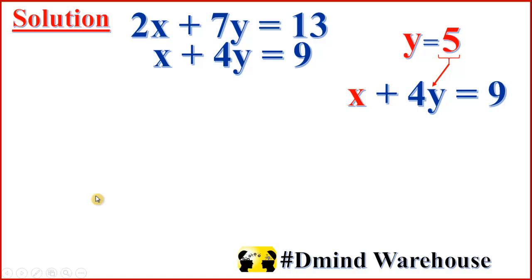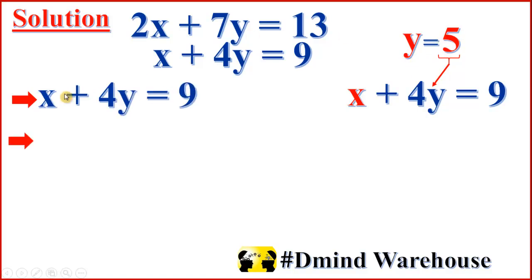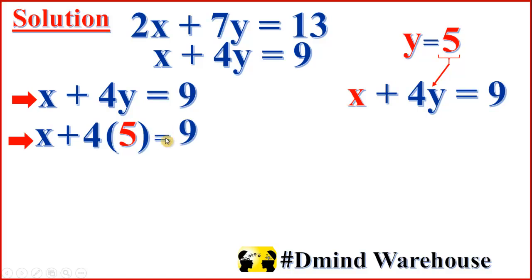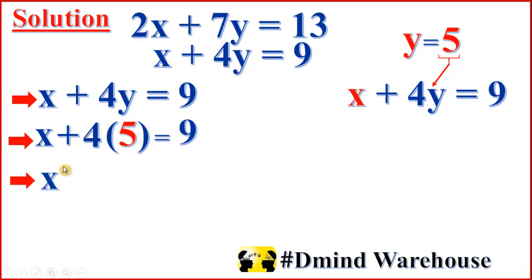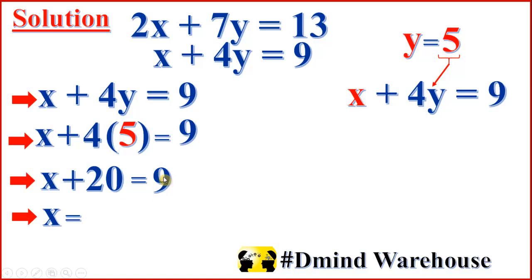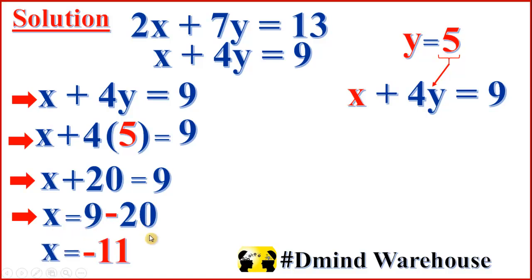Now we can solve for x. We substitute y equals 5 into x plus 4y equal to 9. That means x plus 4 times 5, because the value of y is 5, equal to 9. This means x plus 20 equal to 9. So x equal to 9 minus 20, when positive 20 comes to this side it becomes negative 20, which is negative 11.